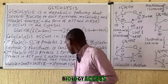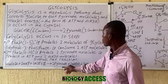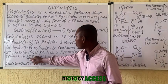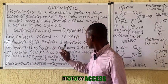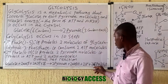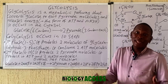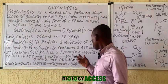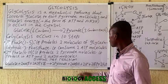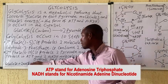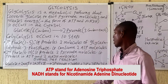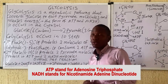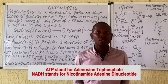The second phase, steps six to ten, produces two pyruvate molecules, four ATP molecules, and two NADH molecules. The net reaction of glycolysis gives us two pyruvate molecules and two net ATP — because four ATP are produced and two are consumed — as well as two NADH produced, and water is given out.